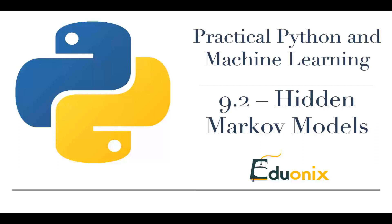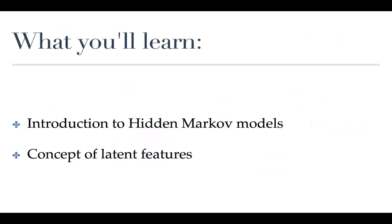Basically, these extra pieces of information influence whether or not you move from one state to another or stay in a state. In this class we are going to introduce hidden Markov models using a famous example, and then work through another example using visualizations.